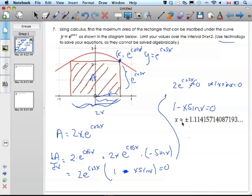Why is there plus or minus? Well, this x would be the plus 1.114. This would be the minus 1.114.